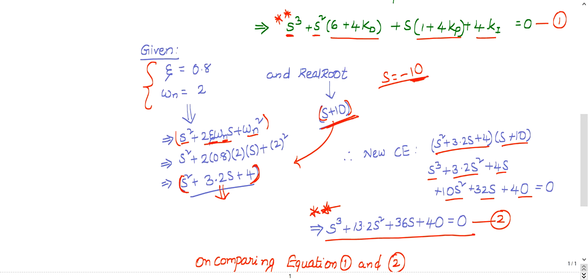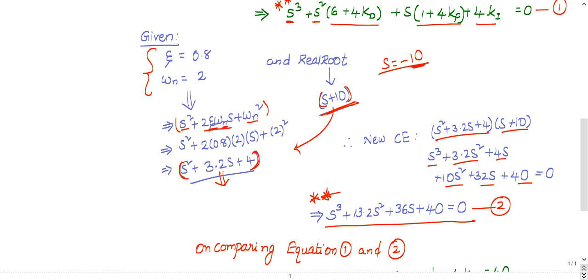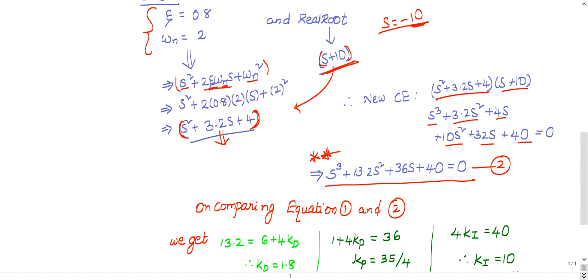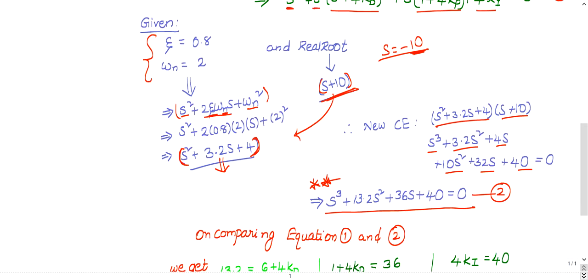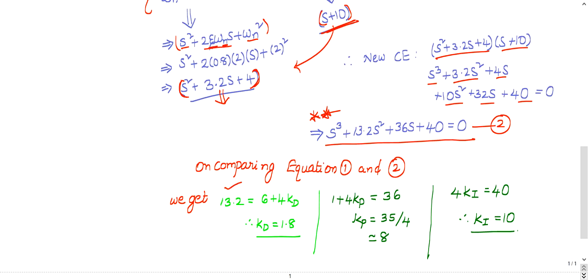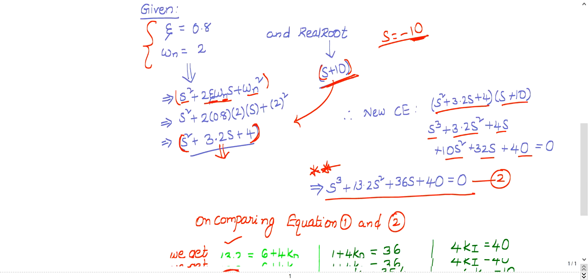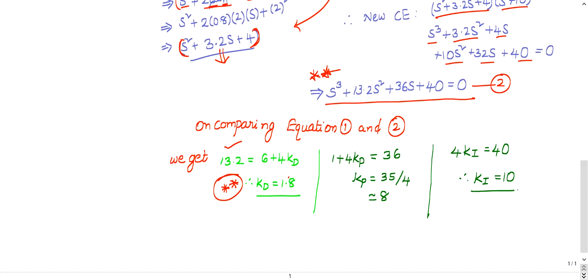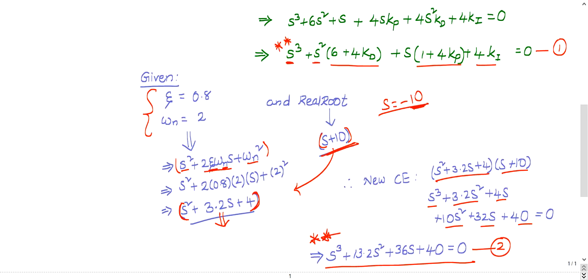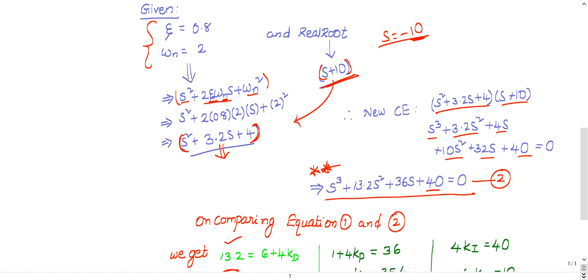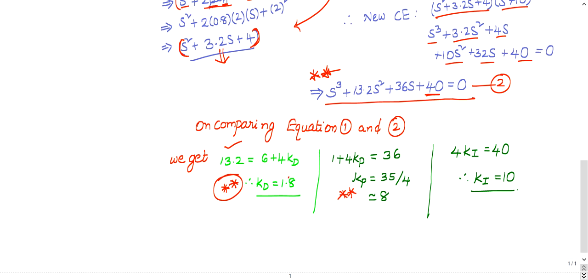Comparing coefficients between s³ + (6 + 4Kd)s² + (1 + 4Kp)s + 4Ki = 0 and s³ + 13.2s² + 36s + 40: the s² coefficient gives 6 + 4Kd = 13.2, so Kd = 1.8; the s coefficient gives 1 + 4Kp = 36, so Kp = 35/4 ≈ 8.75; the constant term gives 4Ki = 40, so Ki = 10.